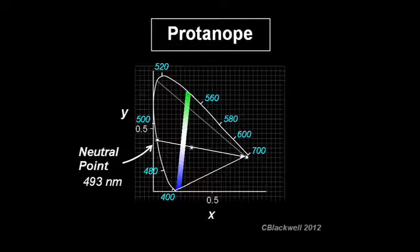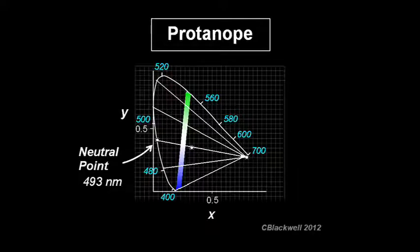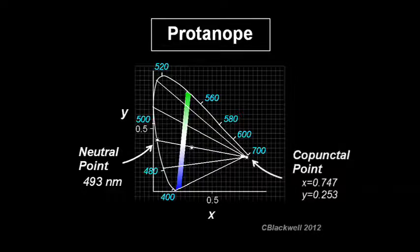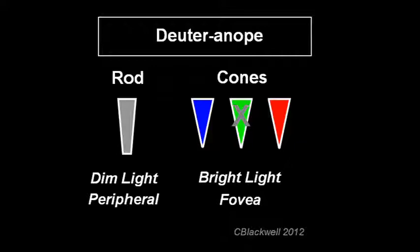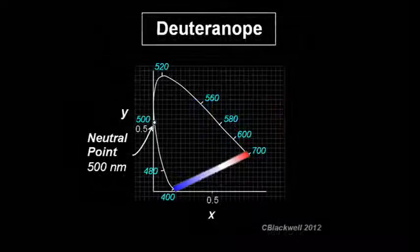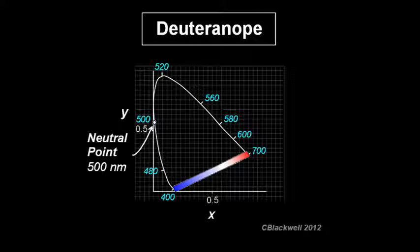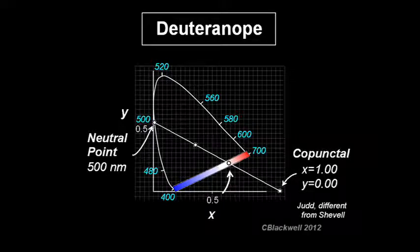We can continue to add such confusion lines that the protonope sees as all the same color, though not necessarily the same brightness. Note that all the lines come together in a point — this is called the copunctal point. Color researchers have used this as one way of finding the location of the missing fundamental red primary. If the green cone is missing, the person is called a deuteranope. There are two neutral points, one at 497 nanometers along the spectrum locus, and another on the purple line along the bottom. Different authors give different values for this copunctal point.